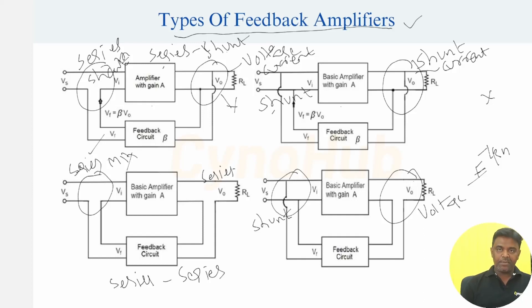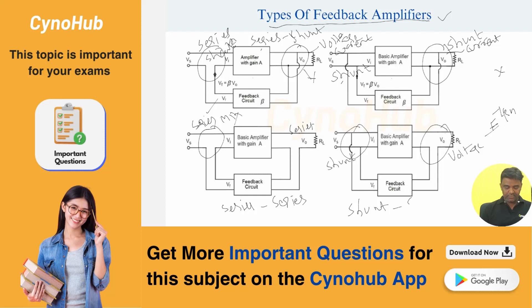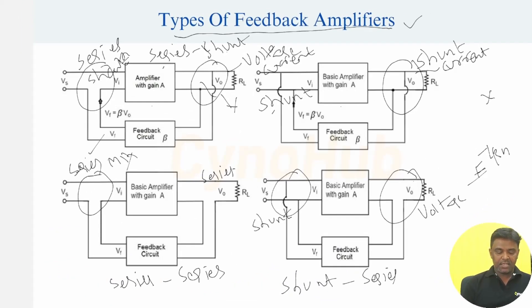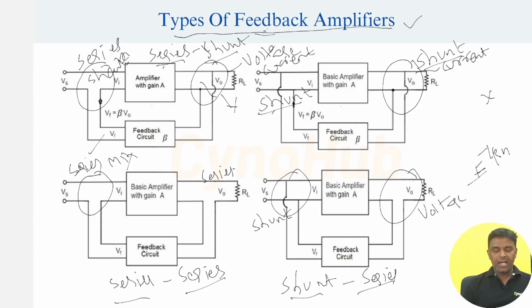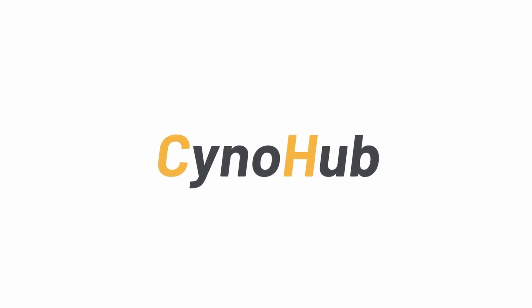So based upon the mixer network and sampling network, the types of feedback amplifiers can be classified into four types: series-shunt, series-series, and shunt-series. These are the four classifications of feedback amplifiers. I hope you understand the topic. We will see more in the next class.